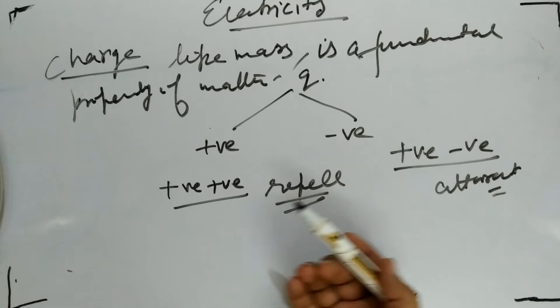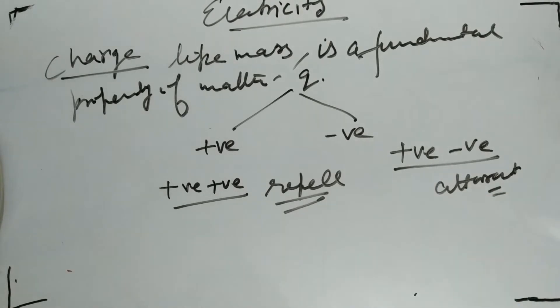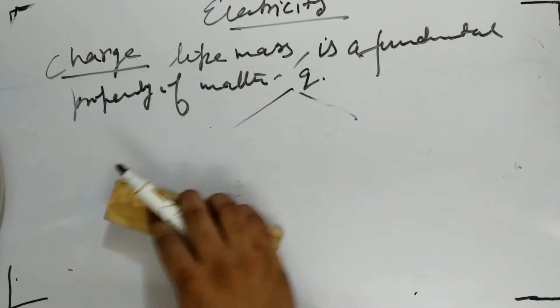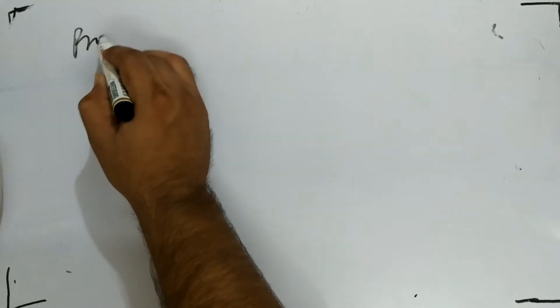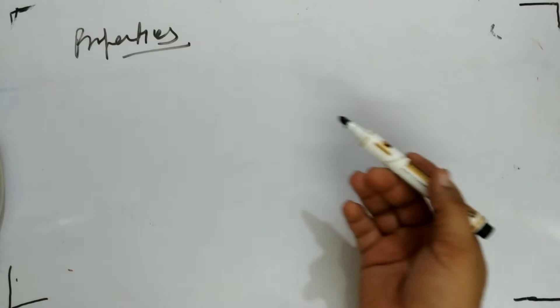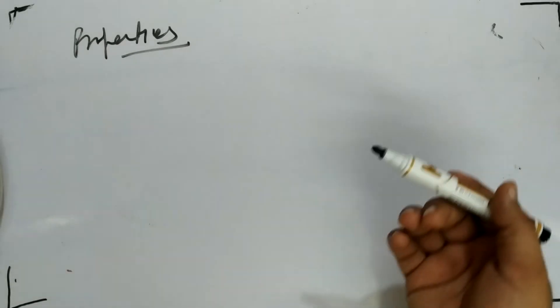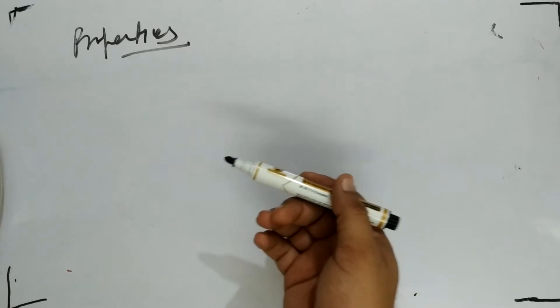Basically, same charges will repel each other and opposite charges will attract each other. Next we have properties of charge. Same charges will repel each other and opposite charges will attract each other.